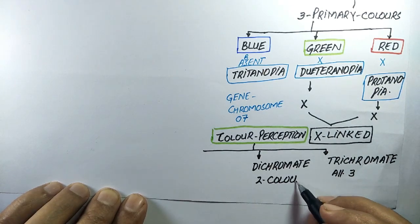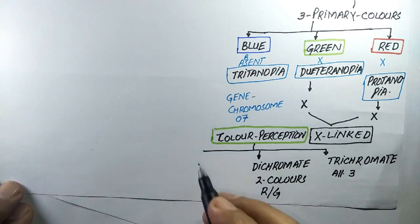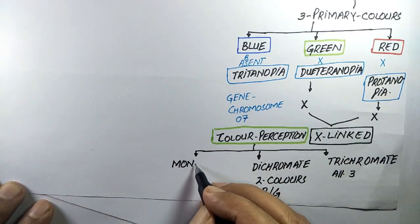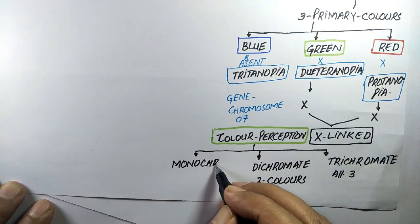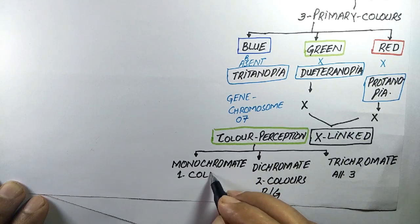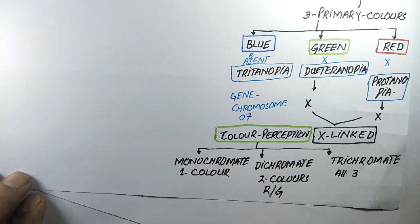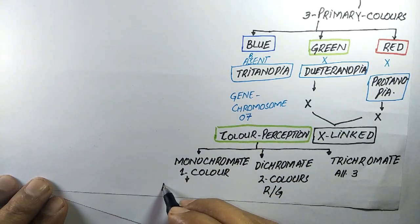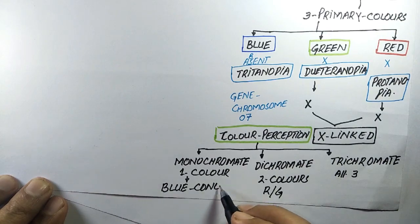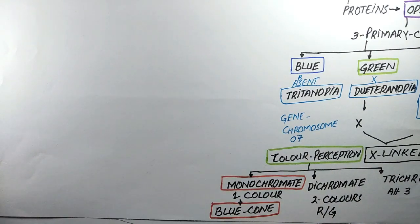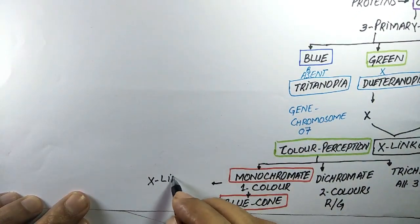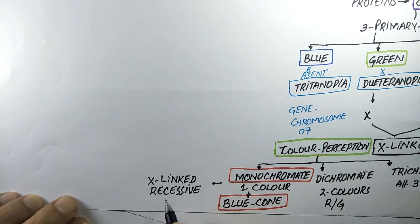Blue cone monochromacy is an X-linked condition in which an individual can perceive only blue color, and opsins for red and green are absent or abnormal in blue cone monochromate individuals.